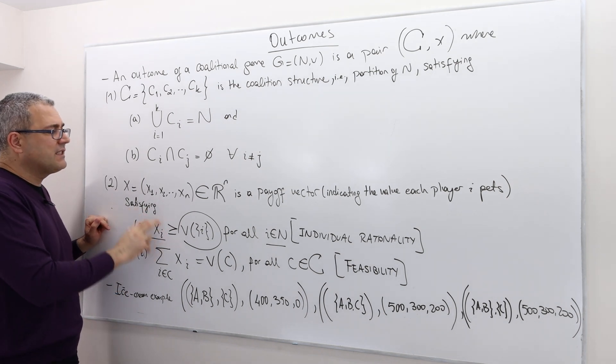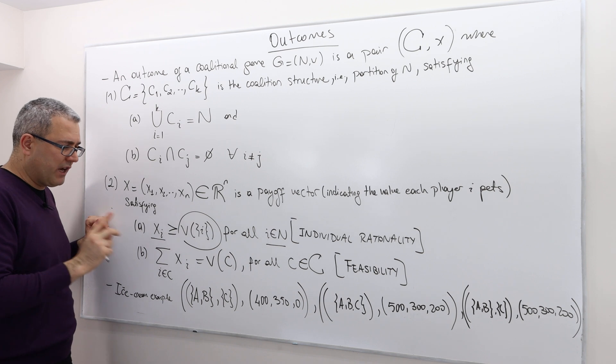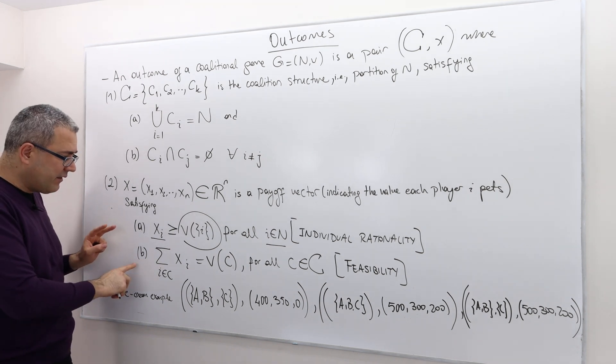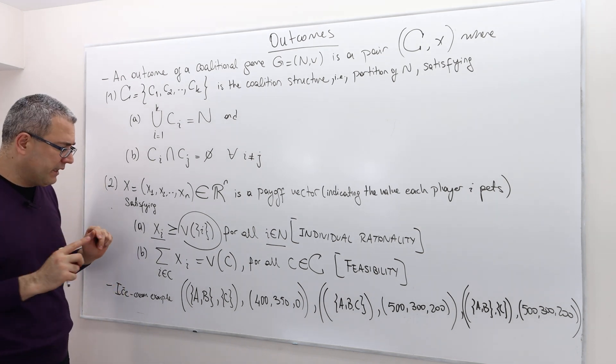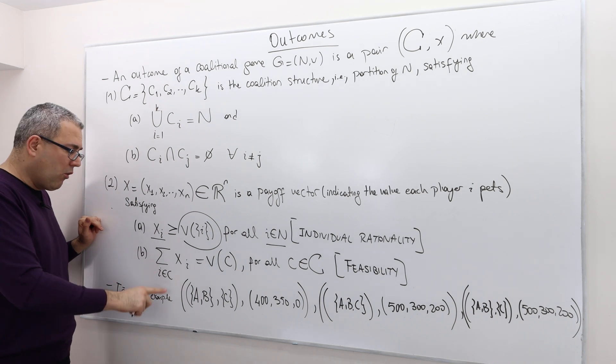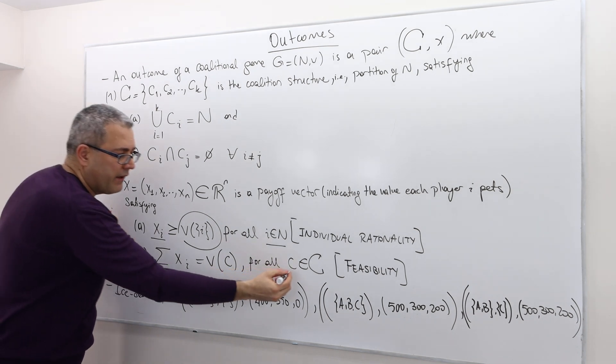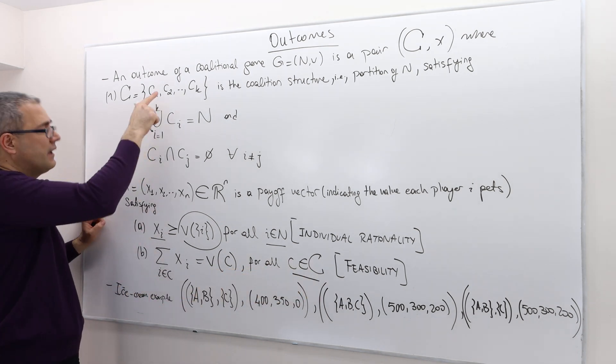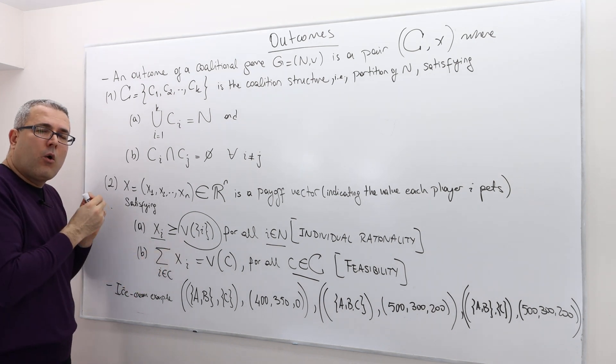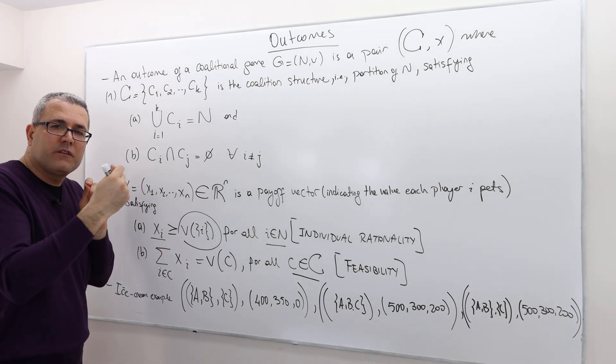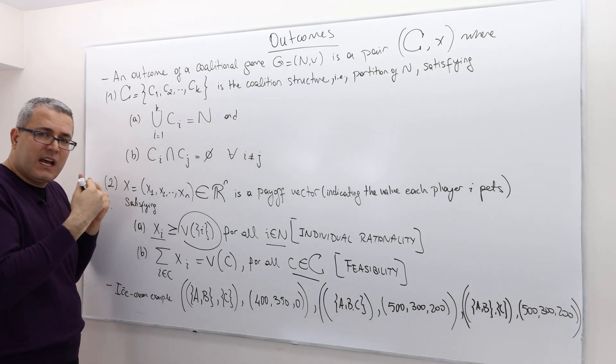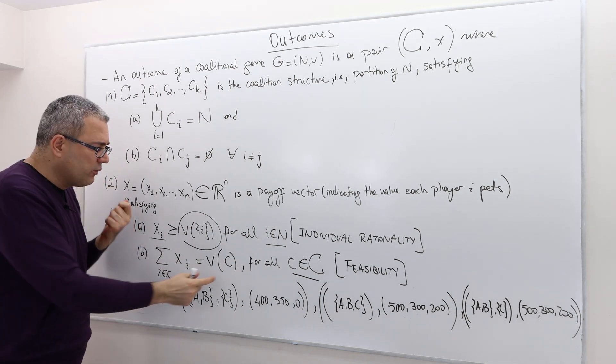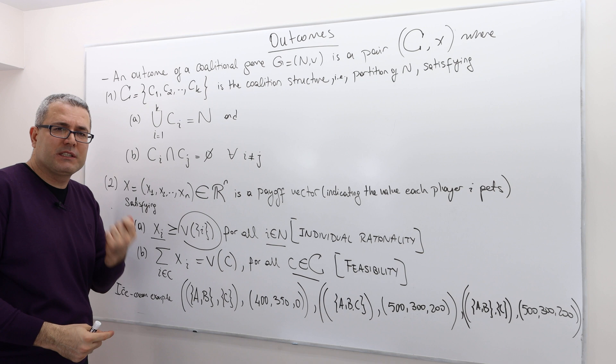The XIs must be individually rational. The second thing is what's called feasibility. Well, for every coalition C, for every coalition C in this set, when I add all the players' payoffs, well, the sum must be exactly equal to the worth of this coalition C.